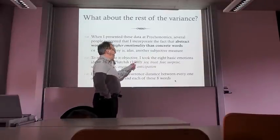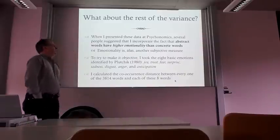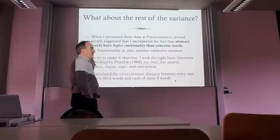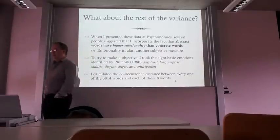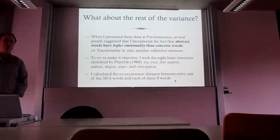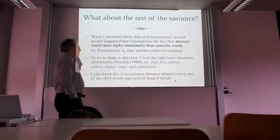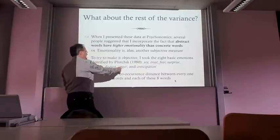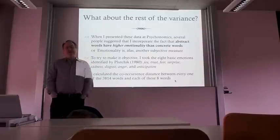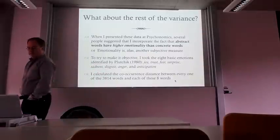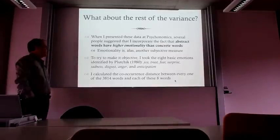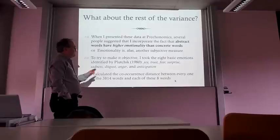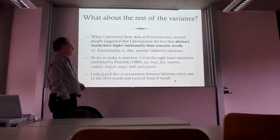The model I picked was Plutchik's from 1980, which was plausible because of its cross-species bias—it argued these are the basic emotions seen across all species. His eight emotions were joy, trust, fear, surprise, sadness, disgust, anger, and anticipation. Since then, I've found there are many emotion models that differ in which words they consider basic emotions, but almost all of them include fear, disgust, anger, and sadness. As a first attempt, it wasn't a bad model to choose.